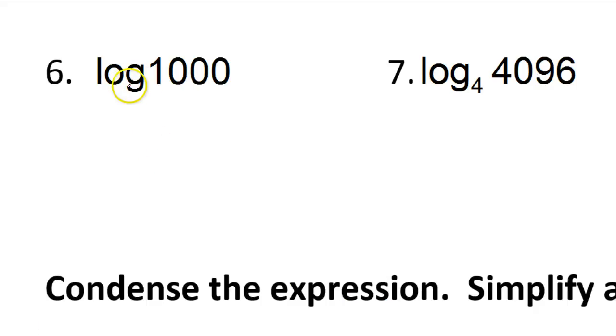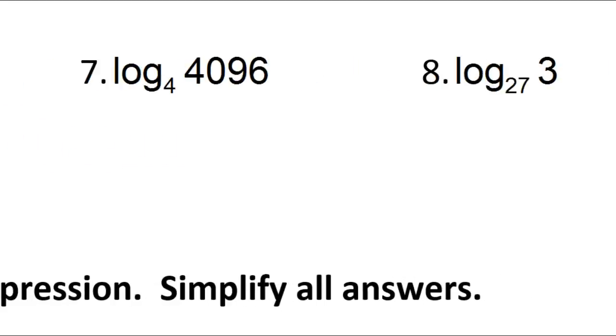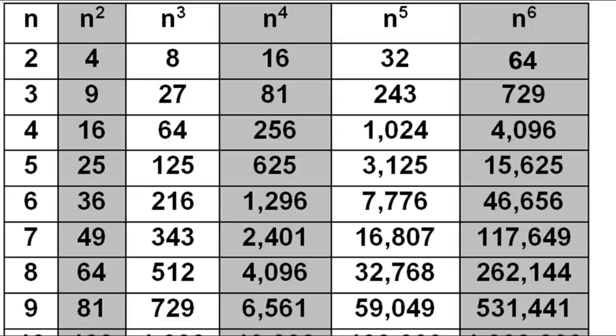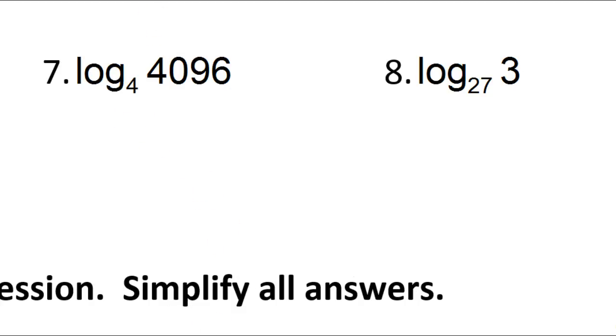The understood base here, when there's none showing, is base 10. What exponent changes 10 into 1,000? That's 3. You can just count the zeros to know that. So the answer is just 3. Looking over at number 7. What exponent changes 4 into 4,096? I don't know that off the top of my head. So, there's 4, there's 4,096. It's a sixth power. So the answer is 6.